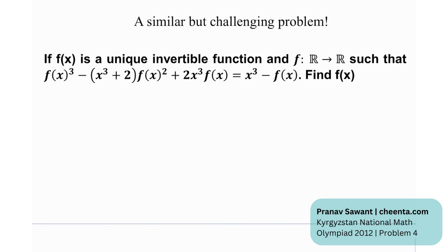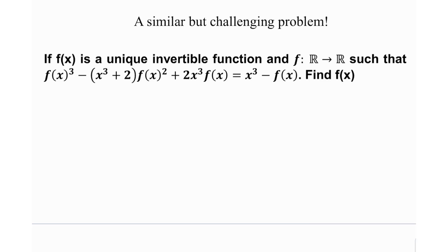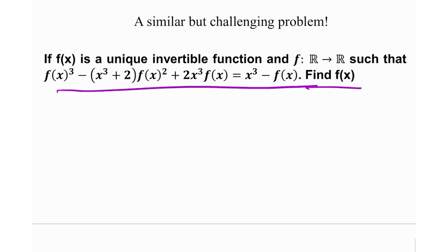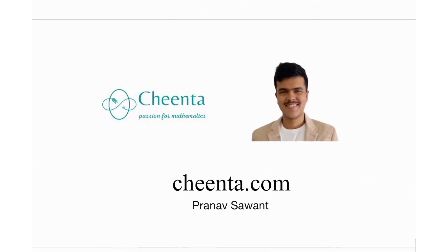At the end, we have a similar challenging problem. If f(x) is a unique invertible function — meaning f(x) is unique and distinct, and invertible means bijective — defined from reals to reals, satisfying the given functional equation, find the value of f(x). They've given the fact that f is bijective, which makes it a bit easier, but it's still a challenge. Try this out, and if you're able to do it, let me know. Until then, I'll see you in the next video. Thank you very much, bye-bye.